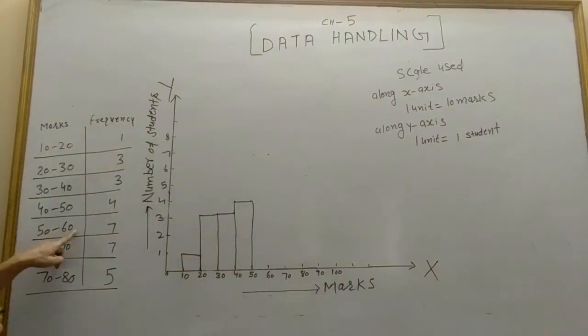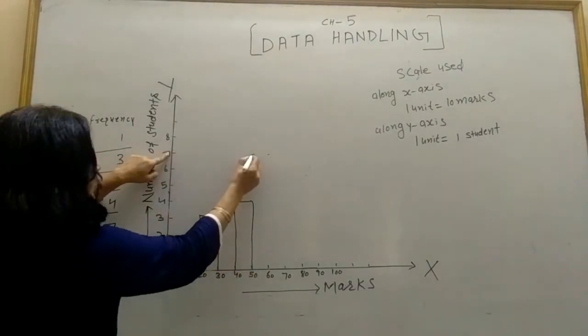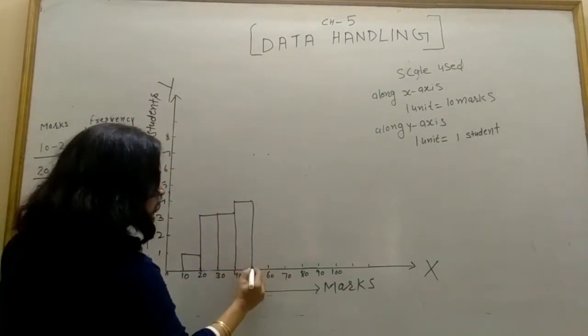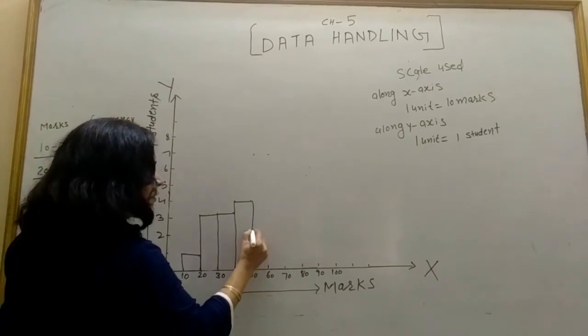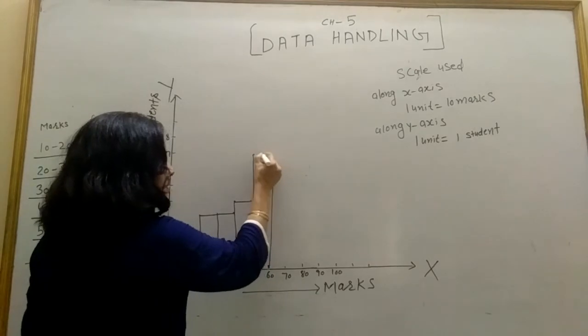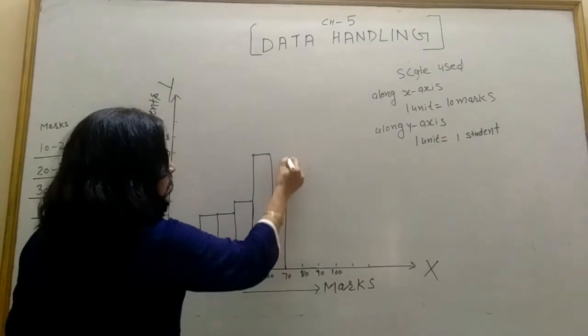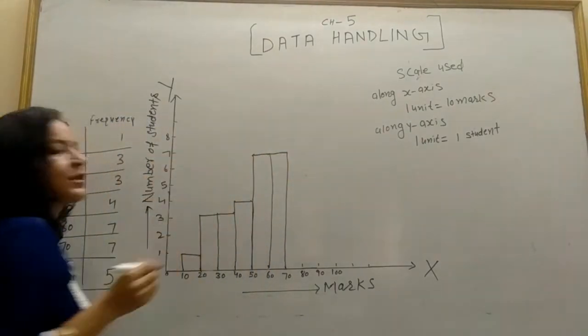50 to 60, seven students. So seven here, this one. 60 to 70, again seven students.